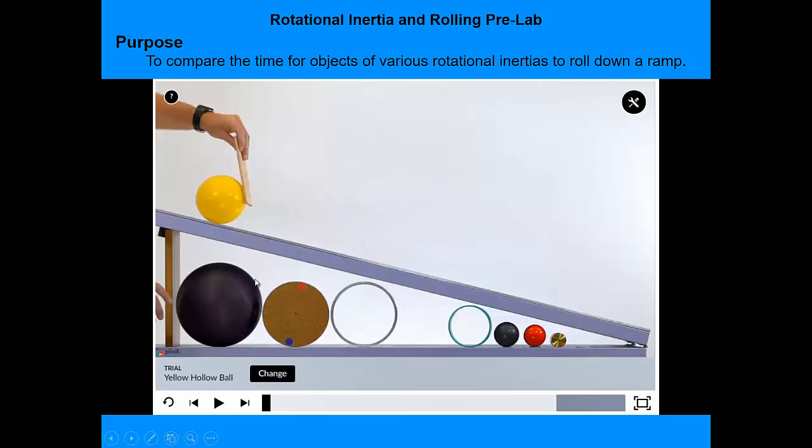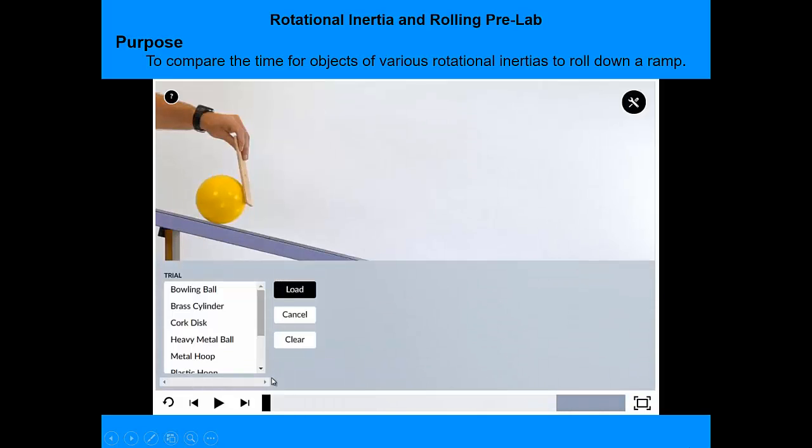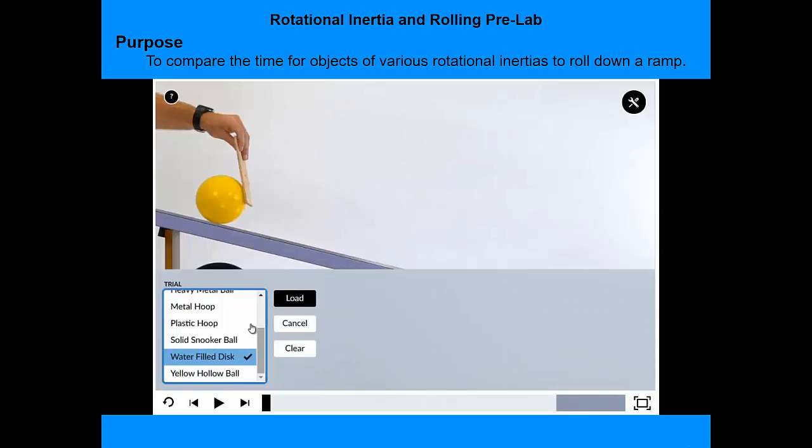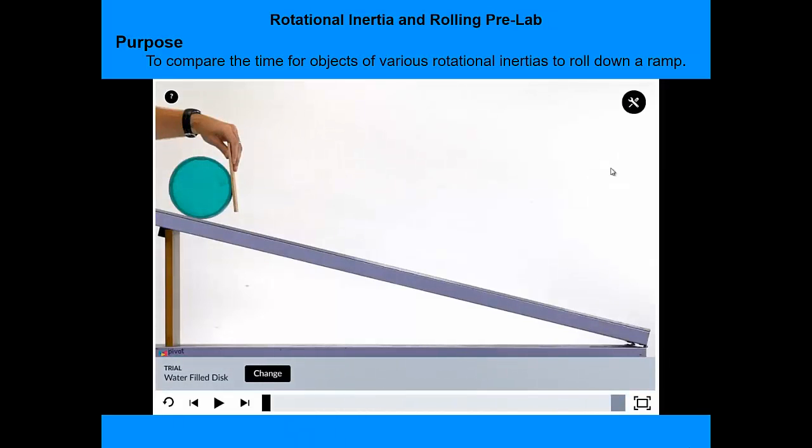So first off, you go down here to Change and pick the object. I'm going to pick one you're not actually going to use, which is called the water-filled disk. Then you have to hit Load.